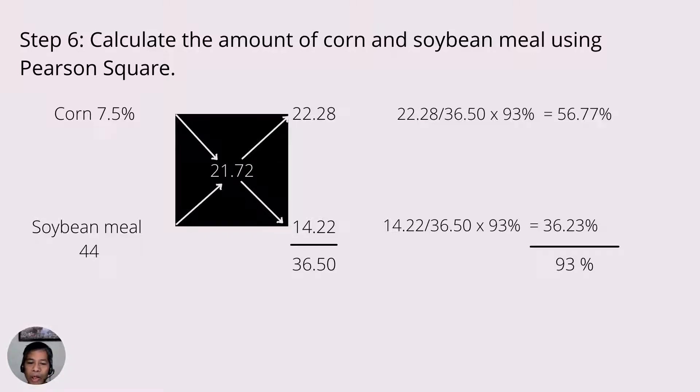So calculating, and as we can see here in our example, we would need 56.77% of corn and 36.23% of soybean meal. That's a total of 93%, okay?